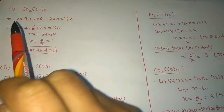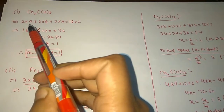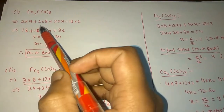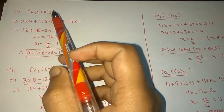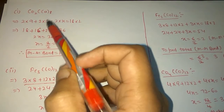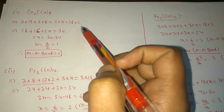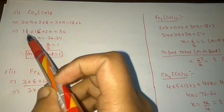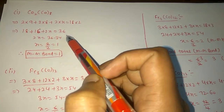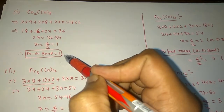For Co₂(CO)₈: cobalt has 9 valence electrons. So: 2×9 + 8×2 + 2X = 2×18, giving 18 + 16 + 2X = 36, therefore 2X = 2, and the number of metal-metal bonds per atom X = 1.